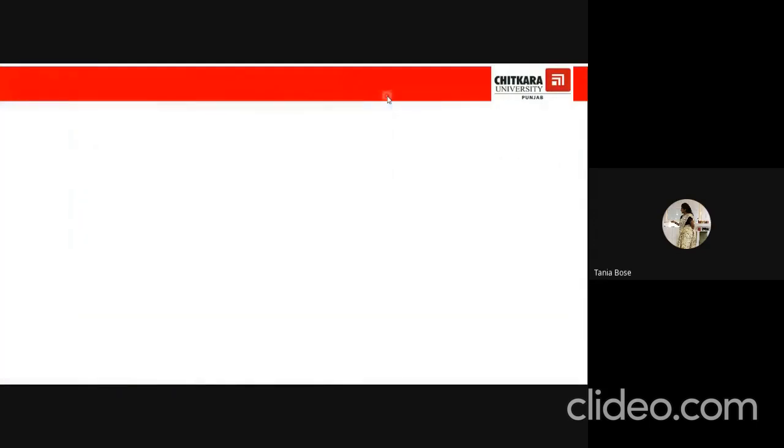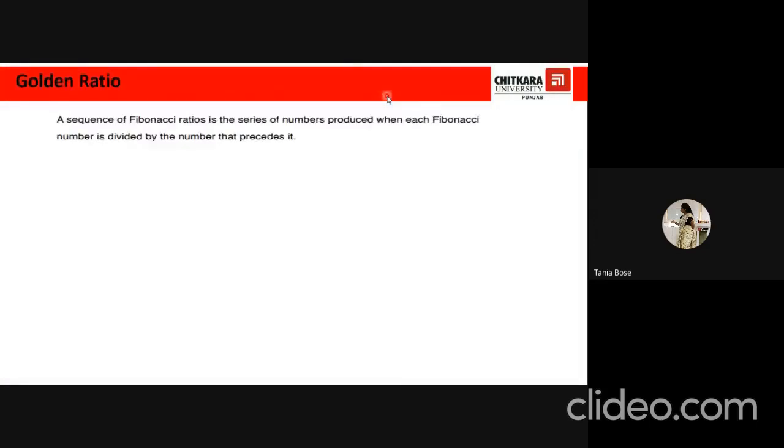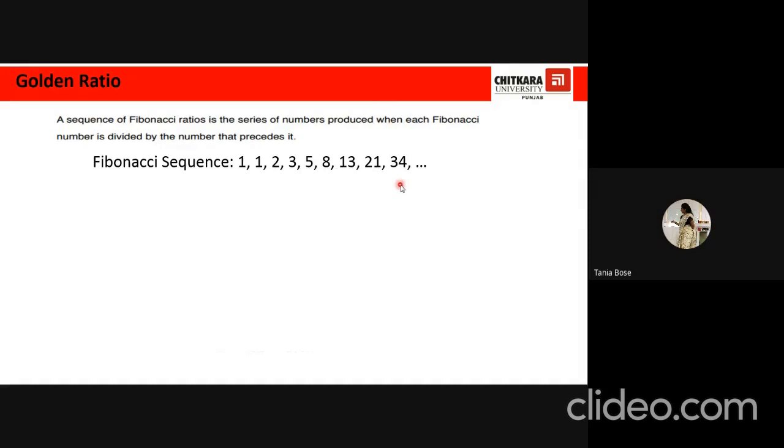So how is this golden ratio obtained? A sequence of Fibonacci ratios are first formed. The ratios are formed by dividing the numbers in the Fibonacci sequence with the number that precedes it. So this was the Fibonacci sequence. So the first ratio that we obtained is, we take up this number, we divide it by the previous one. So we get the ratio 1 by 1, that is equal to 1. The next ratio is 2 divided by 1, that is 2. The next ratio is 3 divided by 2, that is 1.5.